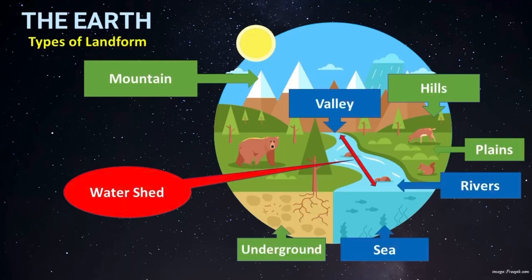Let us look at the types of landforms on Earth. Earth has mountains, hills, and plains. A plain is an open space of land and underground area. Then we have valleys — a valley is a low ground area in between mountains on which water flows down from mountains and hills. Water from mountains flows from valleys into rivers and ends up in the ocean. This whole area where water flows from a valley up to a bay or estuary is called a watershed.